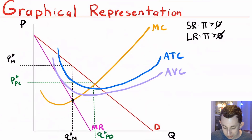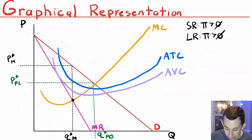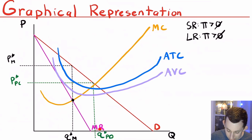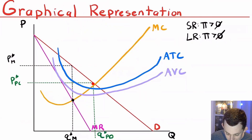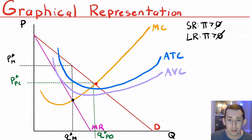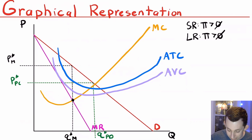For the graphical representation, this is going to look very similar to the monopoly market. We have a demand curve, a marginal revenue curve, and a marginal cost curve. Just like before, we're setting marginal cost equal to marginal revenue to find the quantity. We're following that quantity all the way up to the demand curve, and that's going to tell you the price that prevails in the oligopoly market. Where marginal cost equals the demand curve is the Pareto optimal or the perfect competition price and quantity, so we definitely have a lower quantity than in a Pareto optimal or perfect competition market.